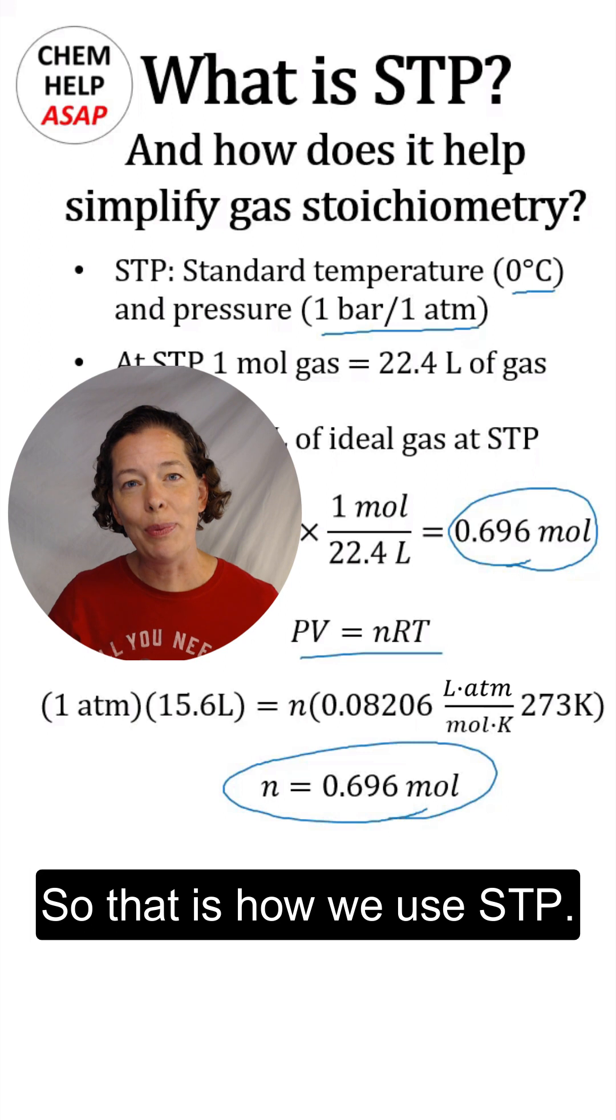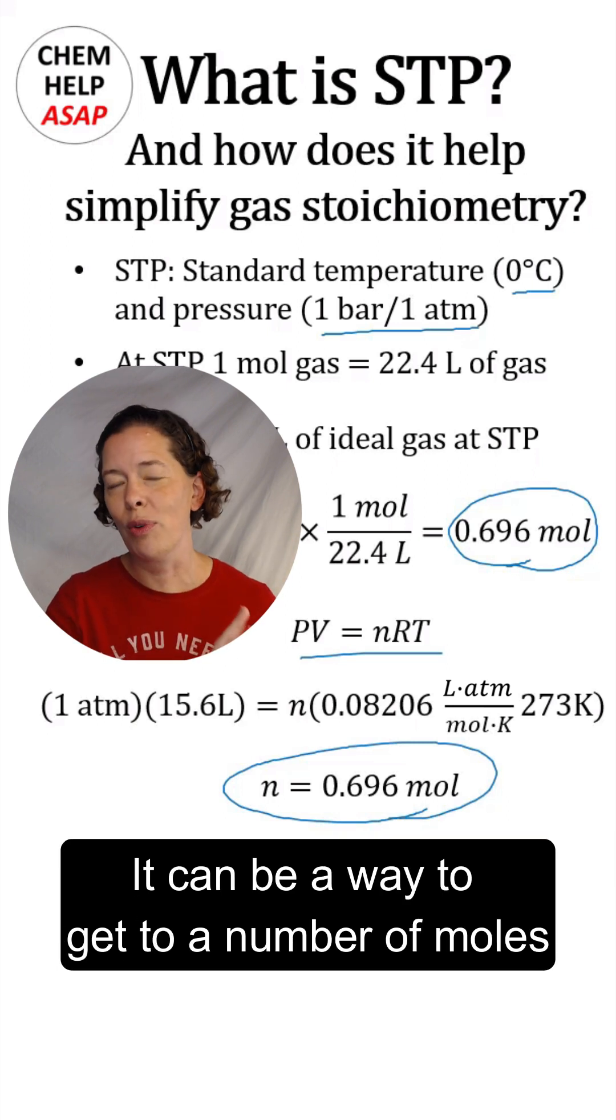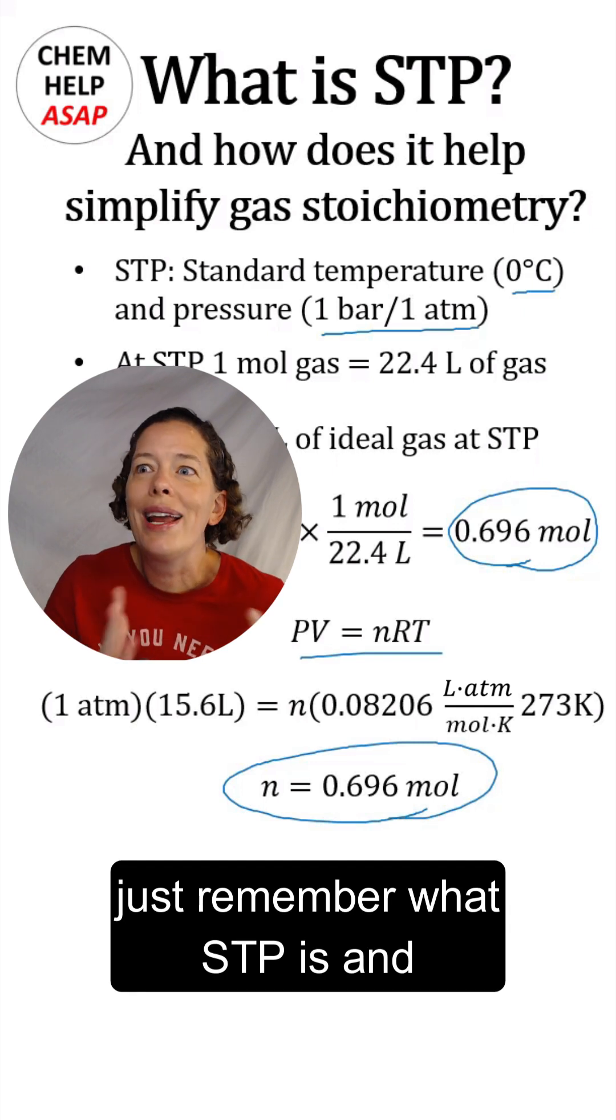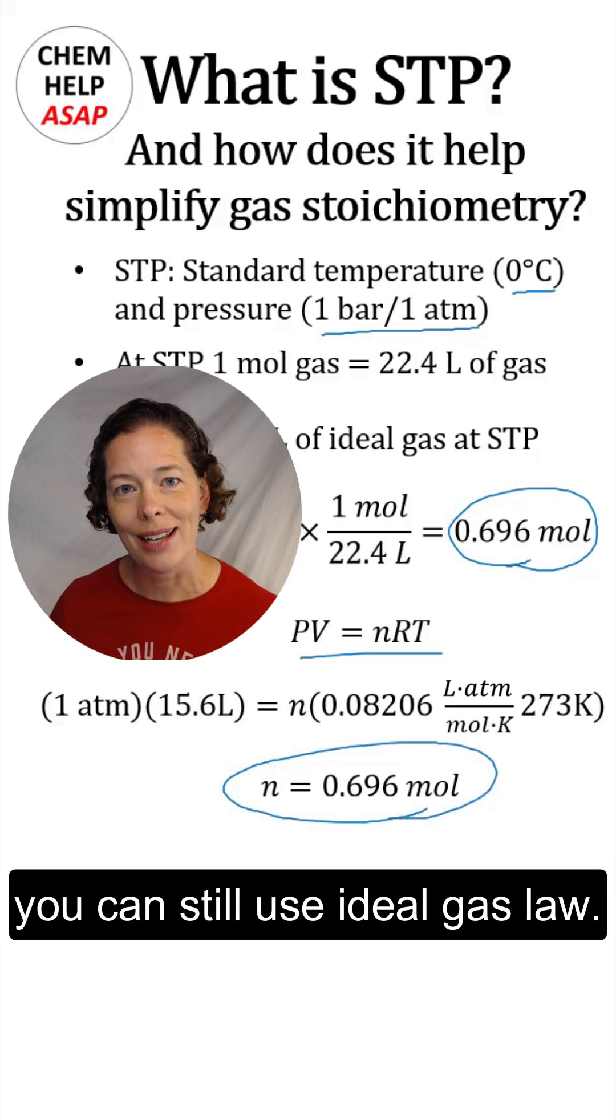So that is how we use STP. It can be a way to get to a number of moles or liters very fast. But again, if you forget, just remember what STP is and you can still use the ideal gas law.